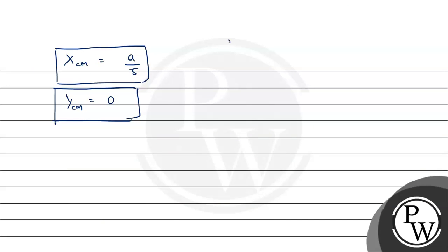So the coordinates of center of mass can be written as (a/5, 0) from the point O.